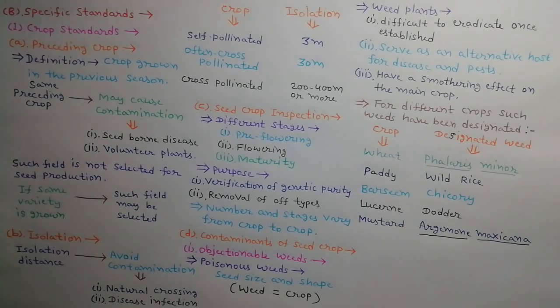The weeds whose seeds are similar in size and shape to the crop seed, are poisonous, and plants which are difficult to eradicate once established, serve as an alternate host for crop diseases and pests, and have a smothering effect on the main crop, are considered as objectionable weeds. For different crops such weeds have been designated. For example, Phalaris minor for wheat, wild rice for paddy, chicory for berseem, dodder for lucerne, and Argemone mexicana for mustard.